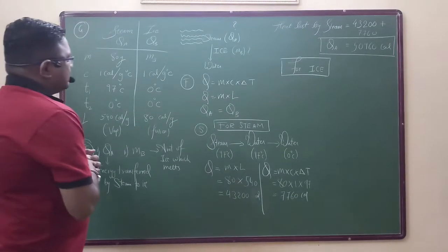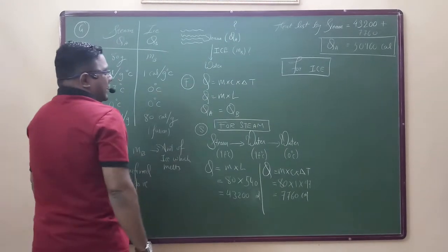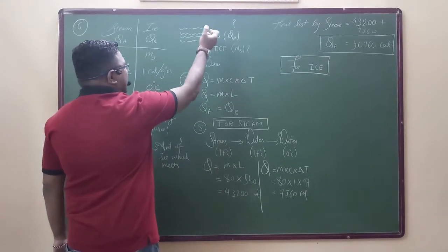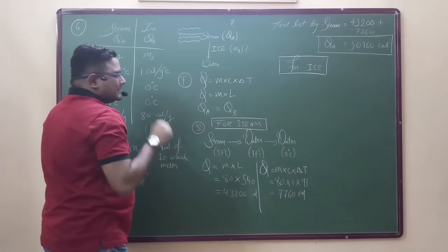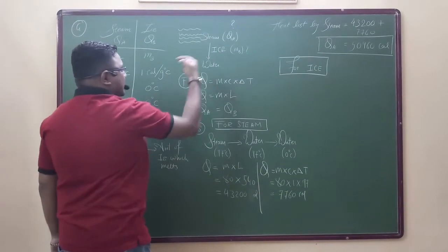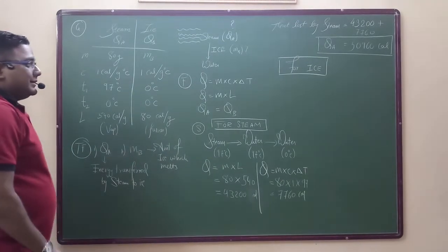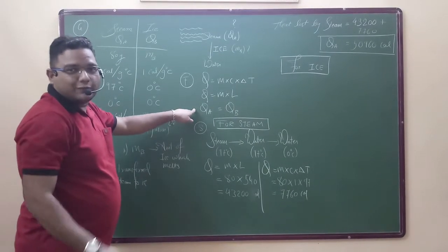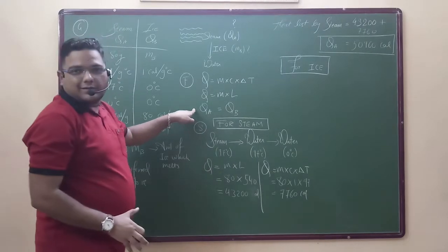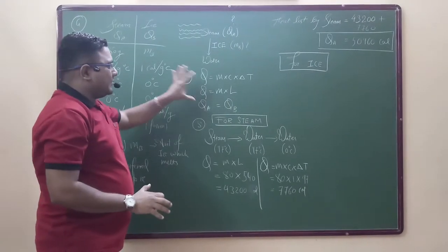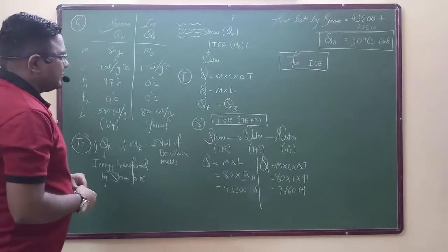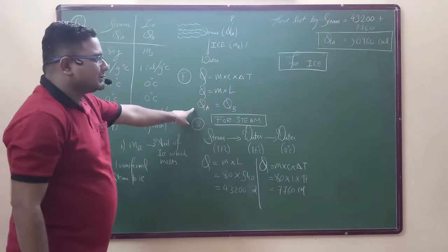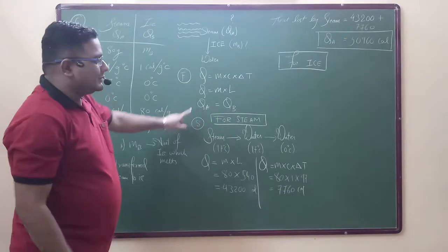So the question is: there is steam and we will add ice, and we want water. By common sense, the steam gives heat to the ice, and the steam gets converted to water. Formula 3 is the same formula — just put it there and we will get half mark for that. So the 3 formulas are: M into C into delta T (heat lost or heat gained), Q equals M into L, and QA equals QB means heat lost by one object equals heat gained by another.